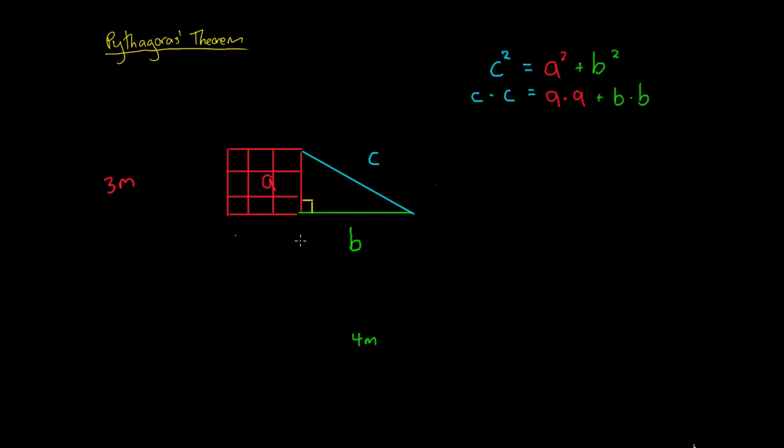Then if we take side B and we square that, so it's 4 meters, we know that this is going to make a 4 by 4 square. So we take side B, we square side B, and we create this square here. Sorry, these are more rectangles. But we create this 4 by 4 square here.